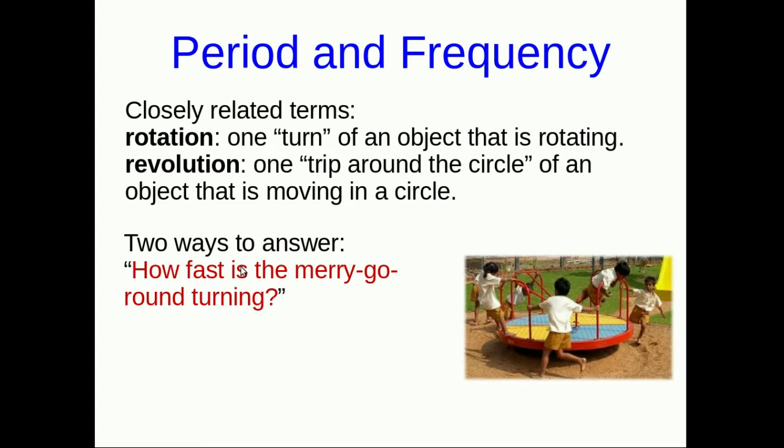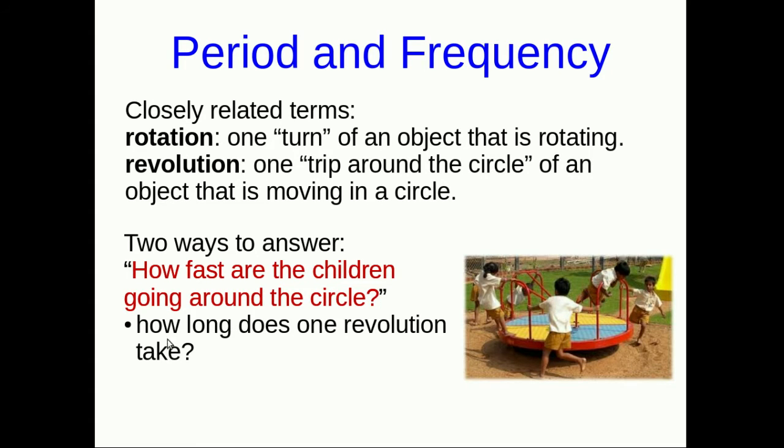Returning to this question of how fast the merry-go-round is turning and how we answer it. In this case, it's equivalent to the question, how fast are the children revolving? Or in slightly more everyday language, how fast are the children going around the circle? Now, that is a vague question. So two slightly more specific questions we could ask are: how long does one revolution take? How much time does it take for a child to go once around the circle? Or, how many revolutions take place in a given time? Say, a minute. How many revolutions take place in a minute?